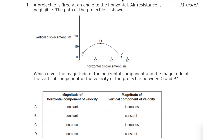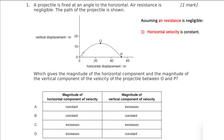Let's look at our assumptions. We've got air resistance, which is negligible, and so therefore we can make two assumptions: one, that horizontal velocity is constant, and two, that vertical acceleration is constant. Regardless of whether it's constant or not at this stage, you should be able to see that at the top, if our vertical velocity is zero, then at point P we should have a non-zero vertical velocity — i.e. the velocity has increased.